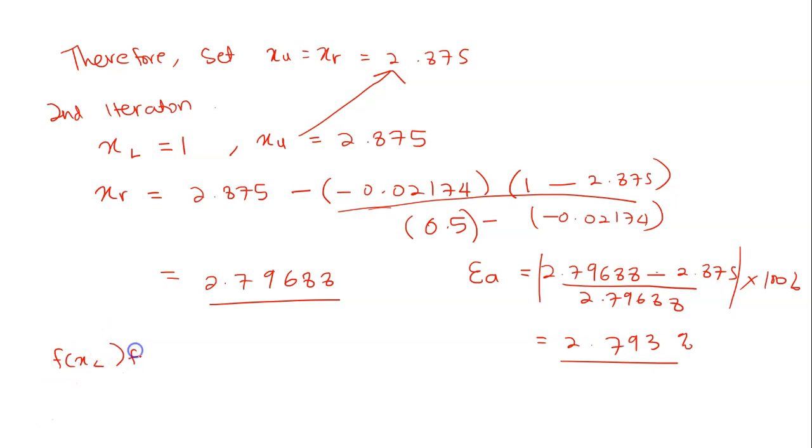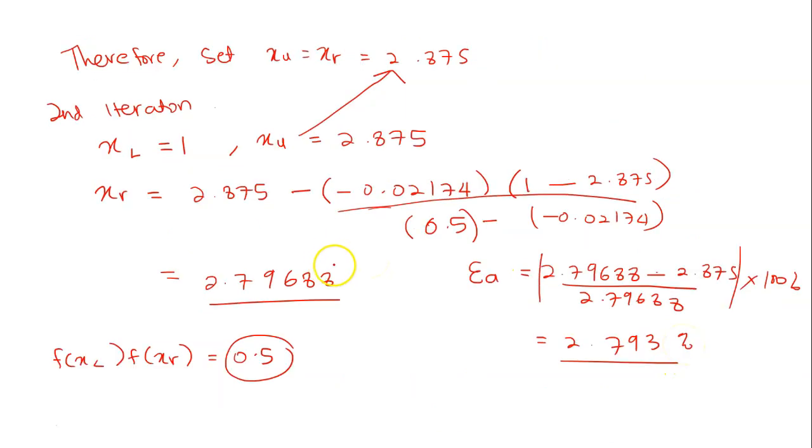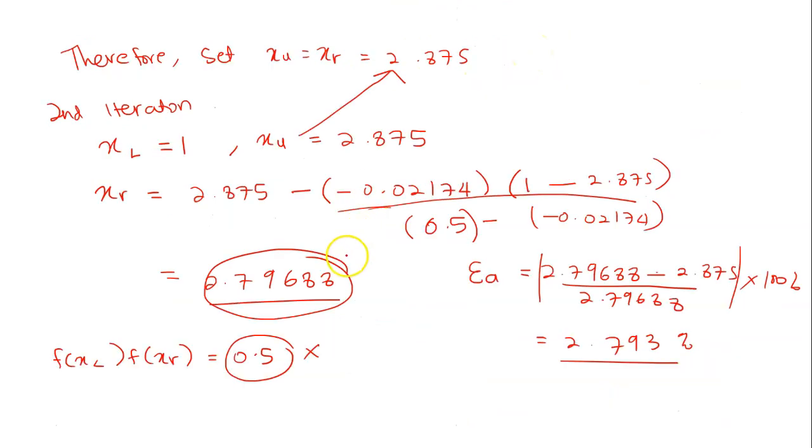f(x_l) times f(x_r) equals to 0.5. This is from the previous calculation which is this one. And your f(x_r) is using this value. And insert this value into this function here. And you will get negative 0.01397.